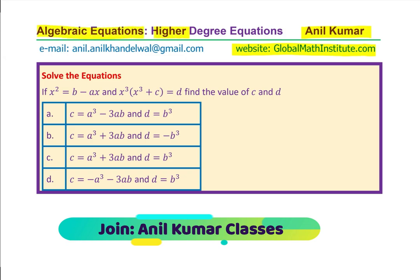We are working with higher degree equations. You need to solve the equations. If x squared equals b minus ax, and x cubed times (x cubed plus c) equals d, find the value of c and d. You are given four choices. This multiple choice question is seen in many competitive exams.